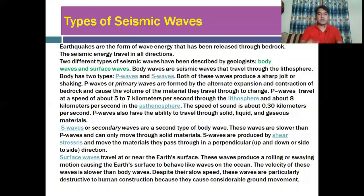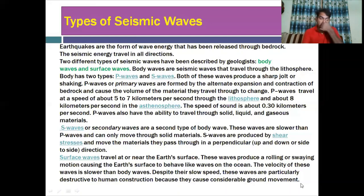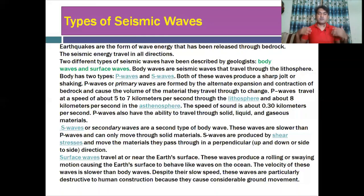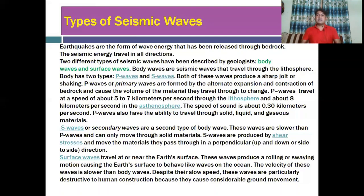The velocity of surface waves is slower than body waves. Despite their slow speed, these waves are particularly destructive to human construction because they cause considerable ground movement. Surface waves bring more destruction because they are happening near the surface, where we live — resulting in loss of human beings and loss of property. Surface waves are slower than both P waves and S waves.